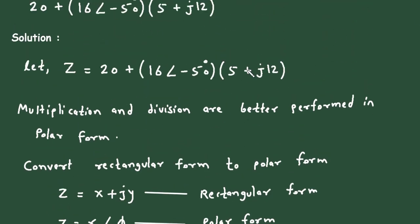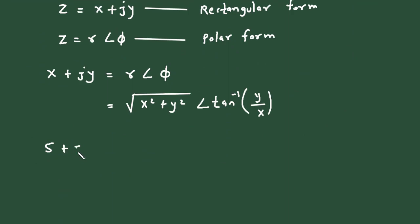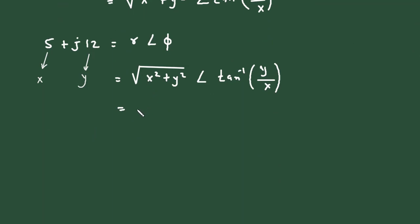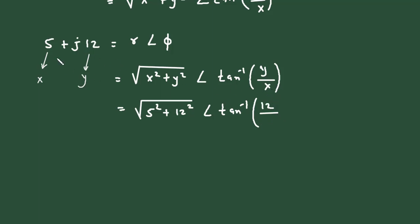So let us take 5 plus j12. Here, 5 represents x and 12 represents y. We have to change it to the r at an angle phi form. The value of r is the square root of x-squared plus y-squared, so under root of 5-squared plus 12-squared, at an angle tan inverse of y by x, where y is 12 and x is 5.